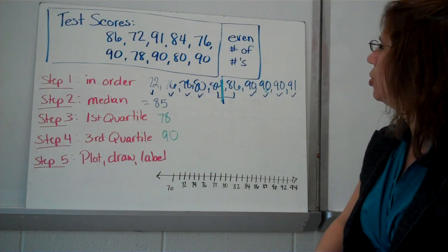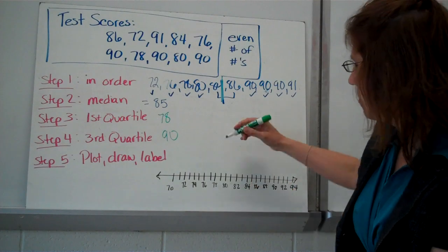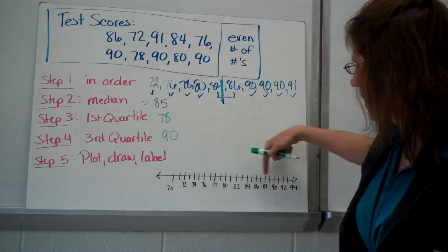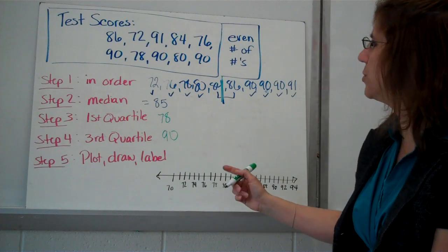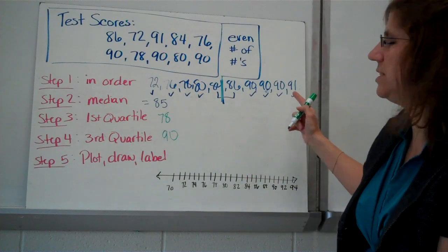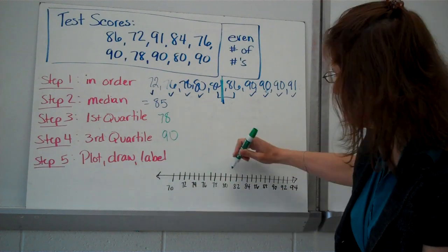All right. So, now we're going to go ahead and draw our box and whisker. We have our median is 85. Notice my number line here. I don't have a zero. You don't have to have a zero on your number line. I'm not even anywhere near zero. I'm in the 70s, 80s, and 90s. So, that's what I put on my number line. All right. So, my median is 85.